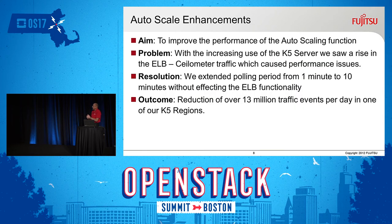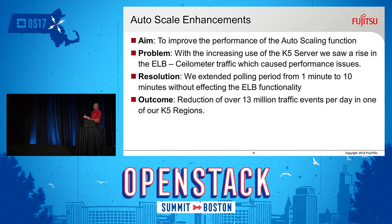For auto scale, we really wanted to improve the way auto scaling worked. We noticed a real problem with K5 server performance when the load balancer's telemetry traffic was causing a lot of performance issues. Our resolution was to extend the polling period from one minute to 10 minutes, and it really didn't affect the ELB functionality at all. The outcome was a reduction of over 13 million traffic events per day in just one of our K5 regions. We have five K5 regions, each with two or more availability zones, so it's a big number to reduce that kind of traffic in our global management network.